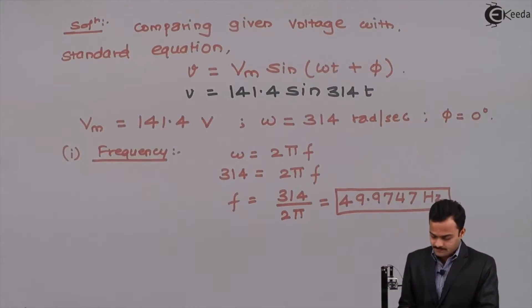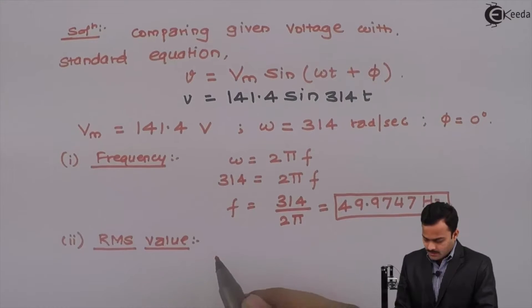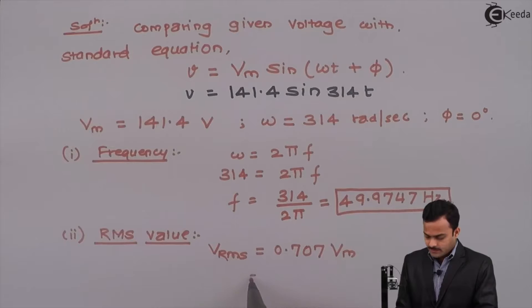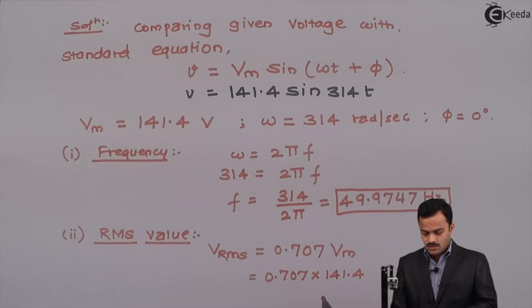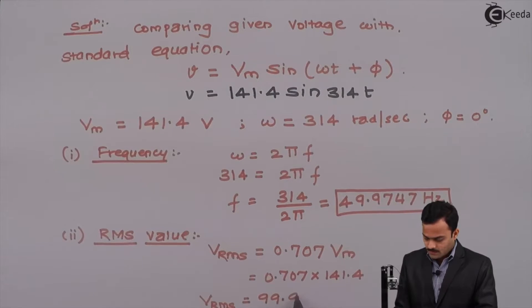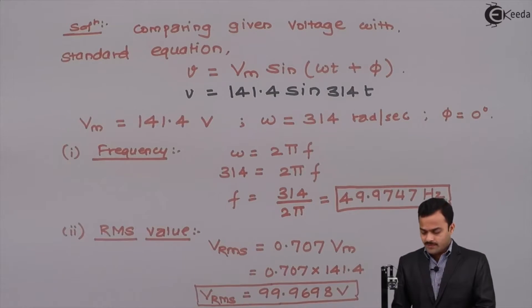First answer is done. Let us go to the second: RMS value. No need to solve for sinusoidal quantity and get RMS value because we have already solved this and got a relationship. RMS voltage is 0.707 times maximum voltage. In our case, it will be 0.707 multiplied by 141.4. If we solve, we will get RMS as 99.9698 volt.